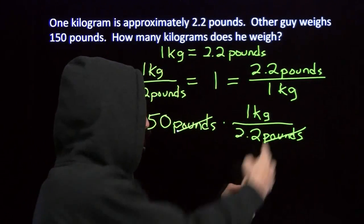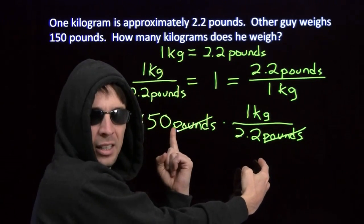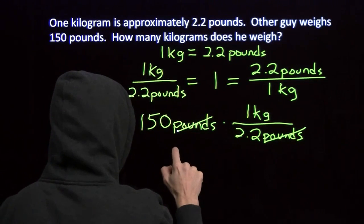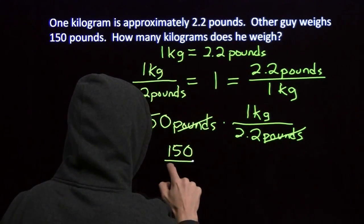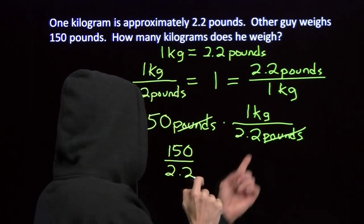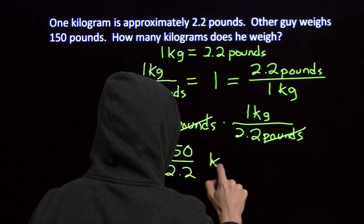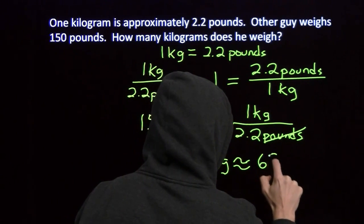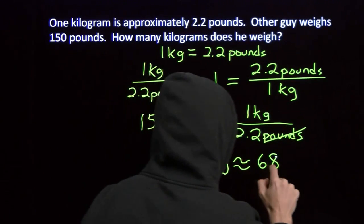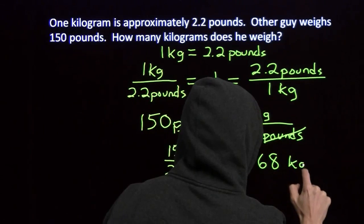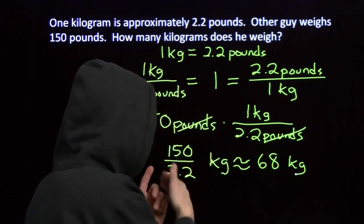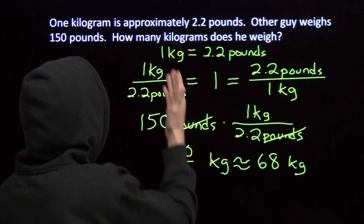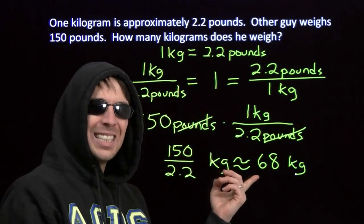If we'd taken the other conversion factor, we'd have kilograms in the denominator, and kilograms and pounds don't cancel. So pounds cancels with pounds, and we're left with 150 over 2.2, and the only units remaining are kilograms. That's about 68 — 150 divided by 2.2 is about 68 kilograms. So our little other guy is only 68 kilograms.